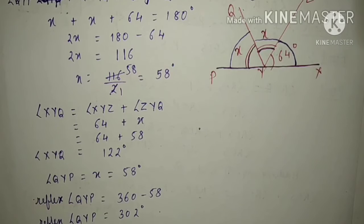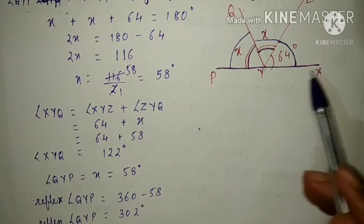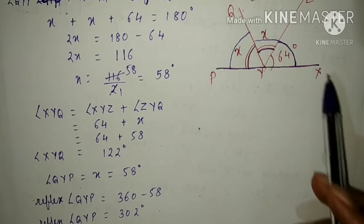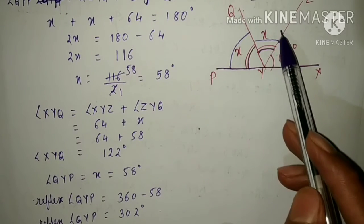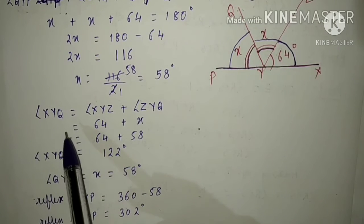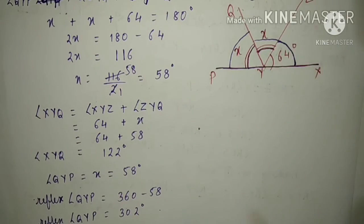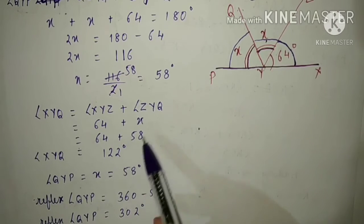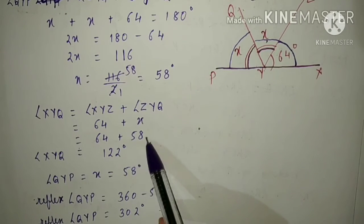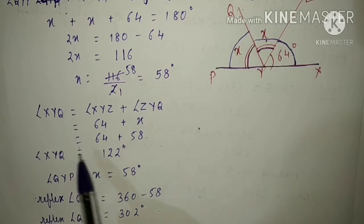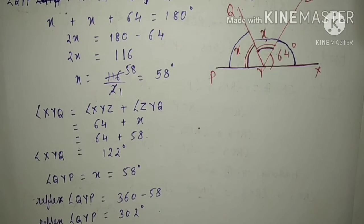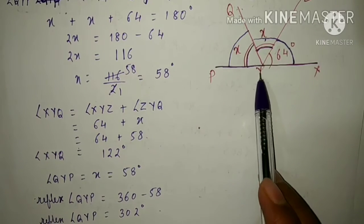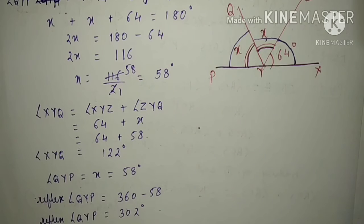Now which angle do we have to find? We have to find angle XYQ. This angle XYQ equals this angle plus this angle, so angle XYQ equals angle XYZ plus angle ZYQ. So angle XYQ equals 64 plus x, which is 58. Adding them, the sum equals 122 degrees. So angle XYQ is equals to 122 degrees.